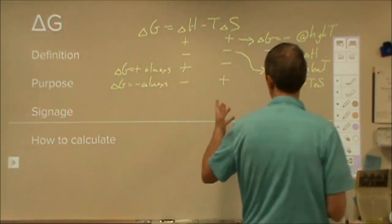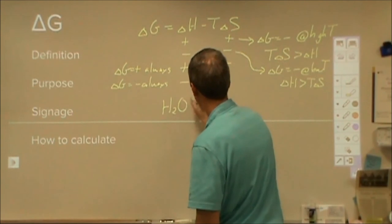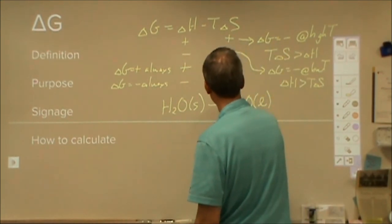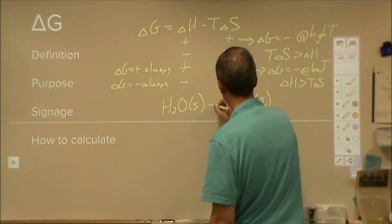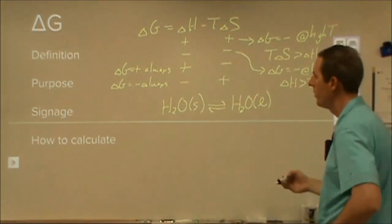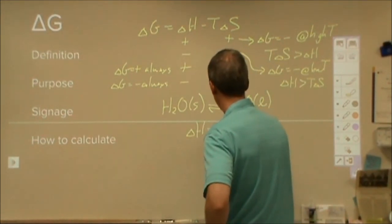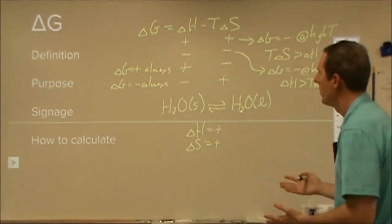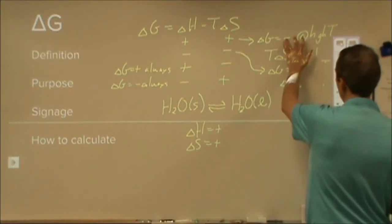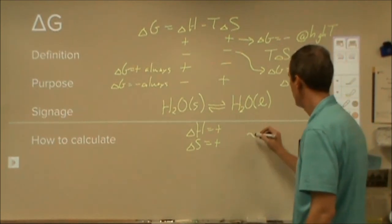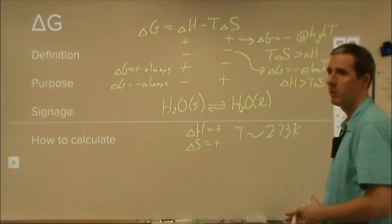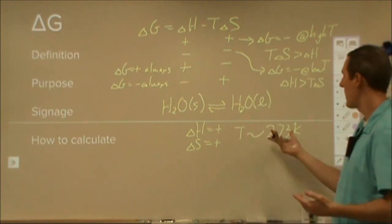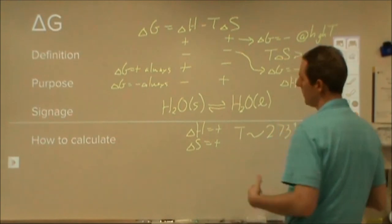For example, taking ice and turning it into liquid water: solid into liquid is an endothermic process, so delta H is positive for that system. Delta S is also positive because we're adding energy and increasing entropy. So this falls into case 1 — delta G will be negative at high temperature. That temperature is about 273 Kelvin, the melting point of ice. Above 273 Kelvin the process happens, below it won't, and at exactly 273 Kelvin you have equilibrium with some ice and some liquid present.